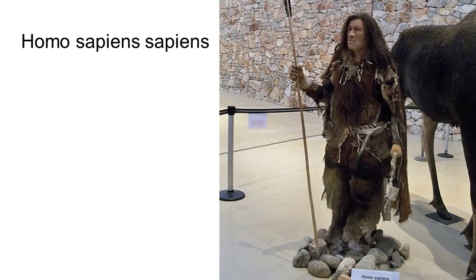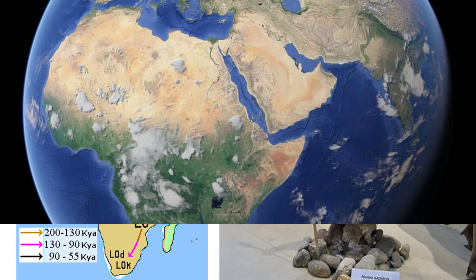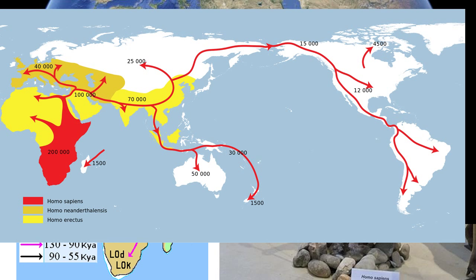Homo sapiens sapiens were the first ones to somehow communicate — and we believe they had the power of speech — and decide to leave Africa. There's a theory called the Out of Africa theory. Scientists believe that humans left Africa between 125,000 to 60,000 years ago. If you look at the map here, there's a belief they left through the northeastern part of Africa into Asia and into Europe. There's also a belief on the next map that they went through the northern part of Africa — so scientists are really considering both of those routes.